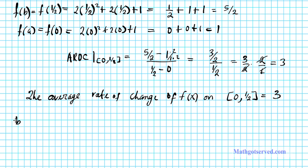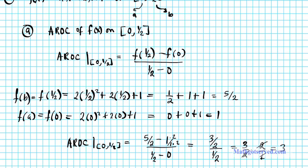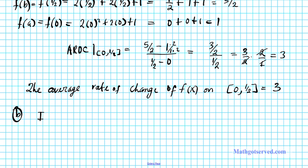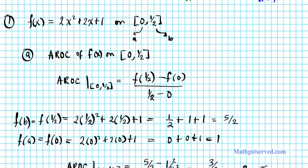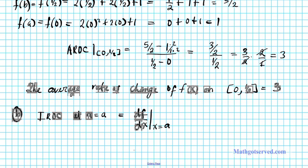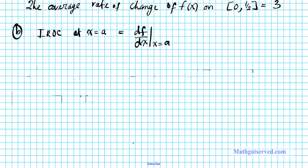Now the b part, we have to compute the instantaneous rate of change. The instantaneous rate of change at x equals a is basically the derivative df dx evaluated at x equals a. So we're looking at df dx, and we're evaluating that at x equals a. That's your instantaneous rate of change. So this involves the use of some tools from calculus to find the derivative first and then we're evaluating that at x equals a.